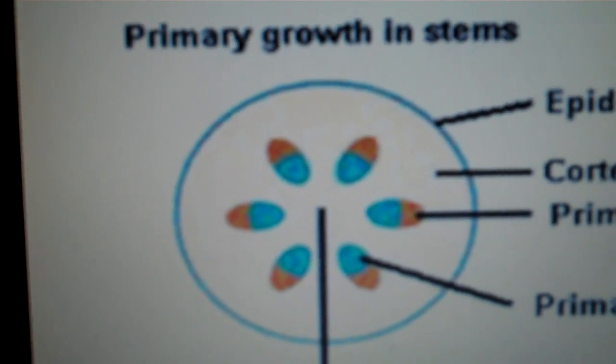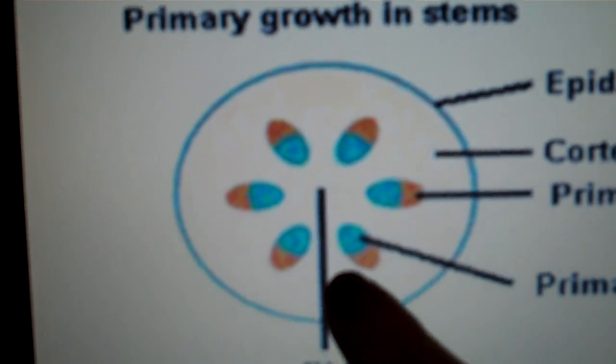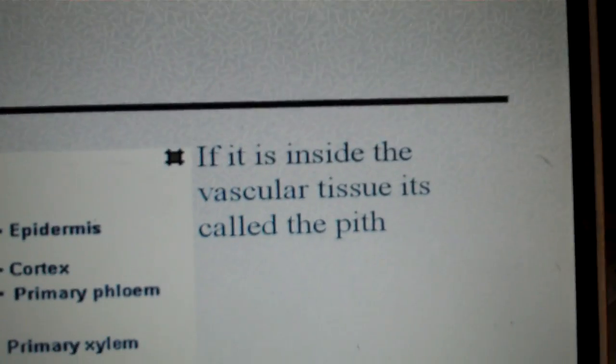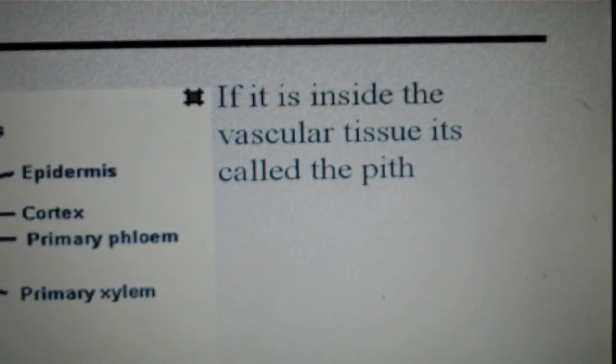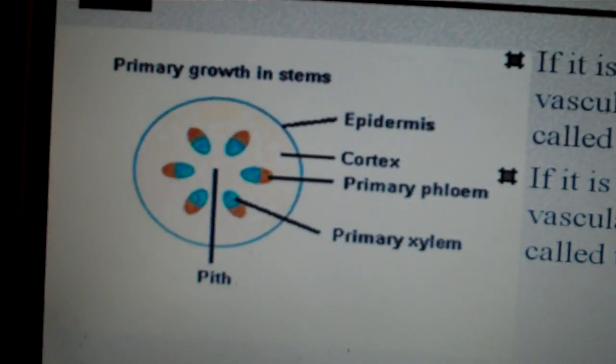Now the ground tissue if it's inside of the vascular tissue is called a pith. If it's located on the outside part that's called the cortex. So if it's inside the vascular tissue it's the pith, and if it's outside the vascular tissue it's called the cortex.